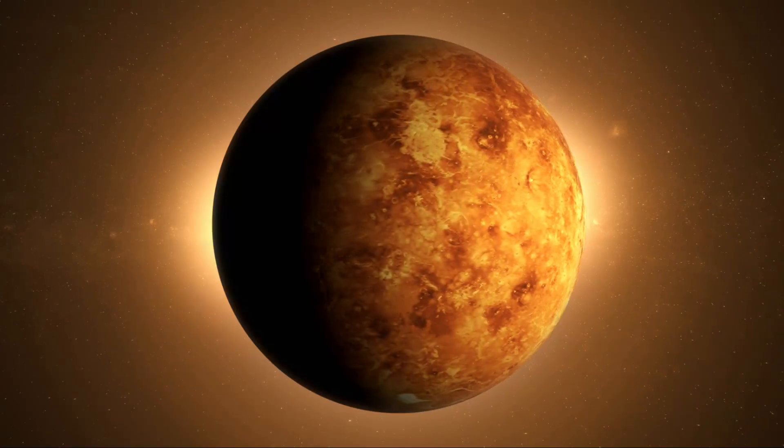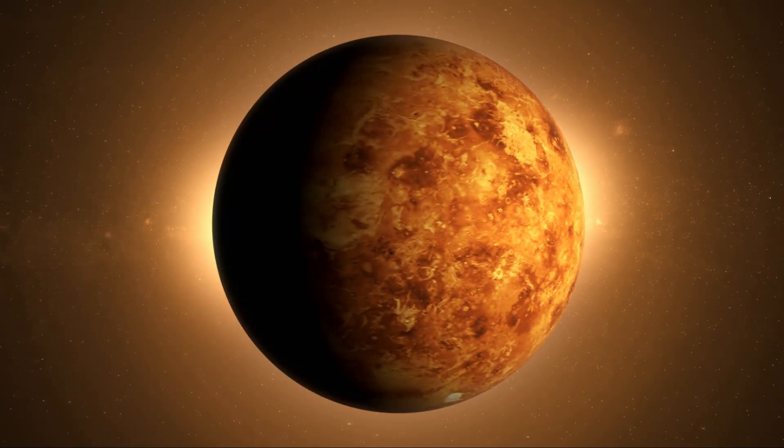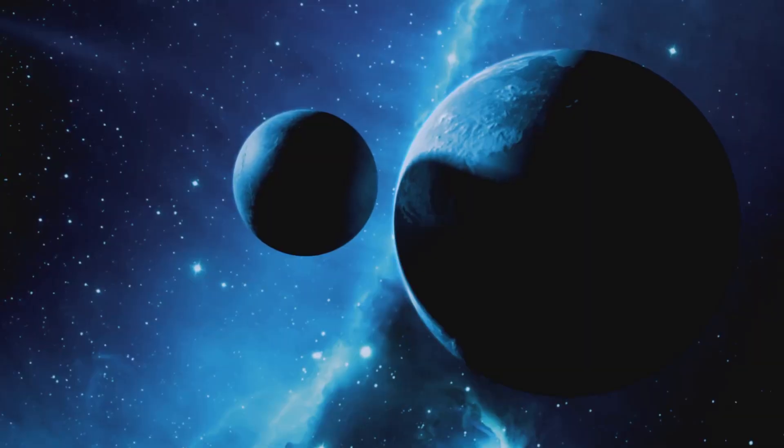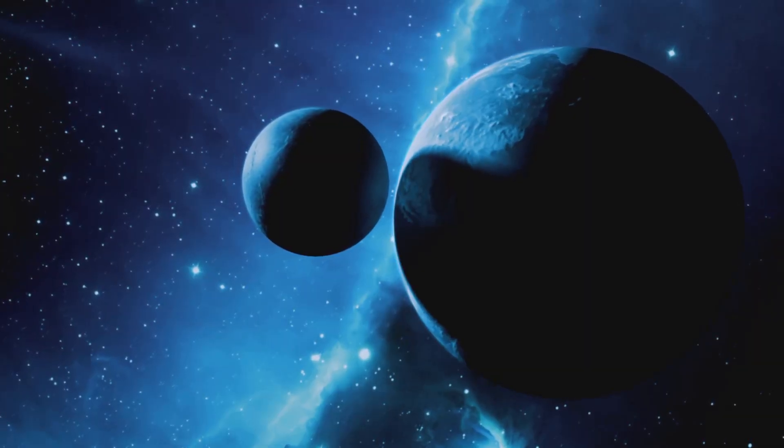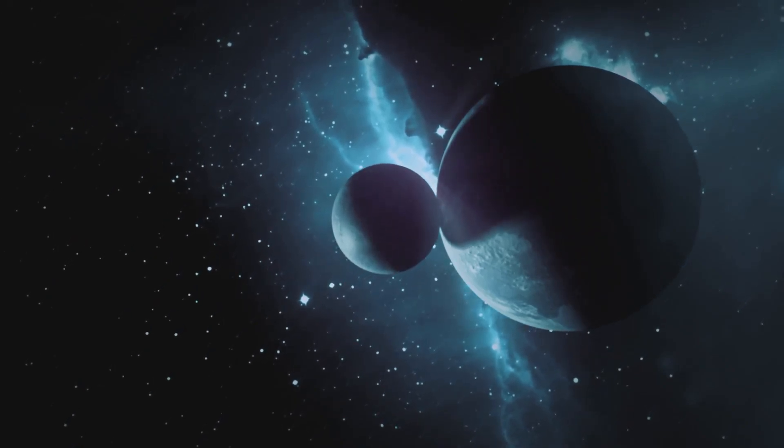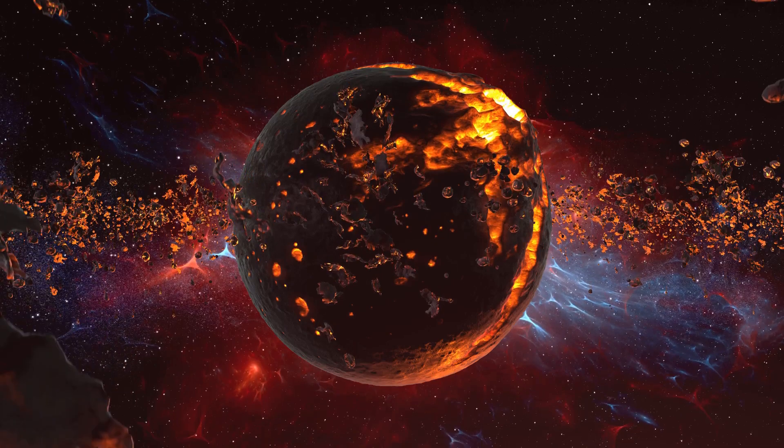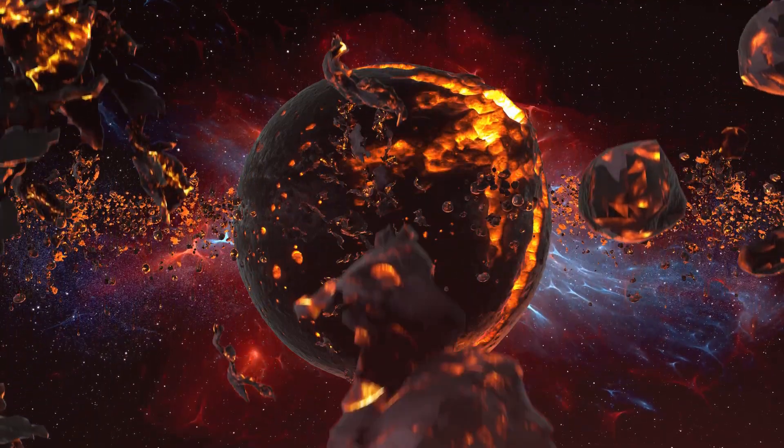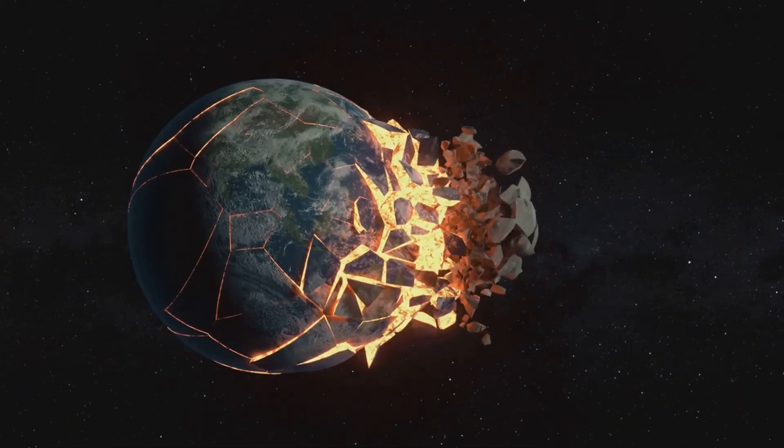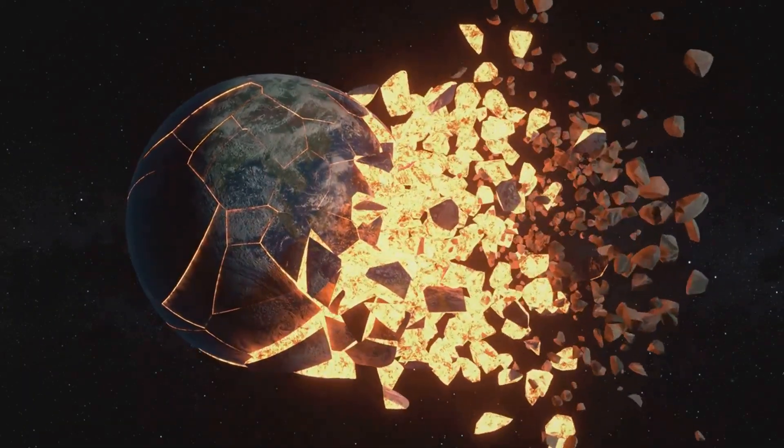But how did Earth transition from a Venus-like state to the life-sustaining planet we know and love? The answer may lie in a catastrophic cosmic event. Scientists proposed that a massive impact with a theorized planet, Thayer, gave birth to our moon. Think of it as a grand celestial game of billiards with planets as the balls on the table. But what triggered this cosmic collision?